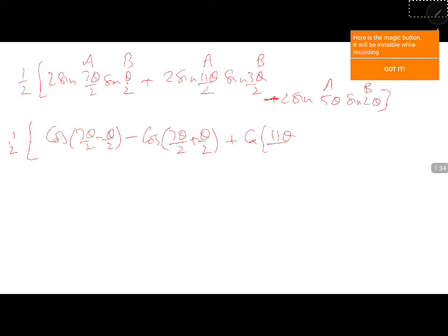Cos of 11 theta by 2 minus 3 theta by 2 minus cos of 11 theta by 2 plus 3 theta by 2. Cos of 11 theta by 2 minus cos of 5 theta by 2 minus cos of 5 theta plus 2 theta.